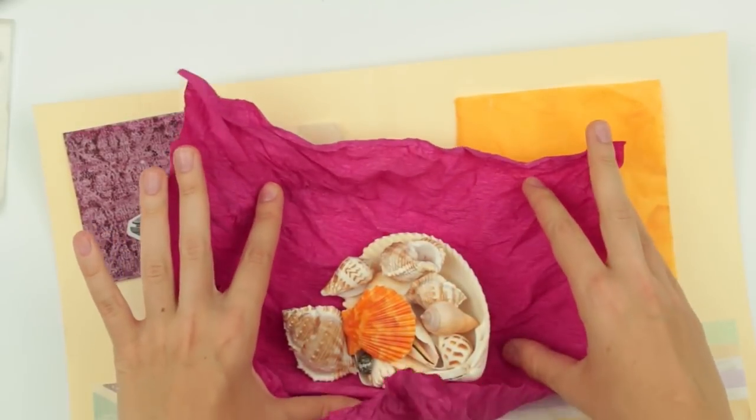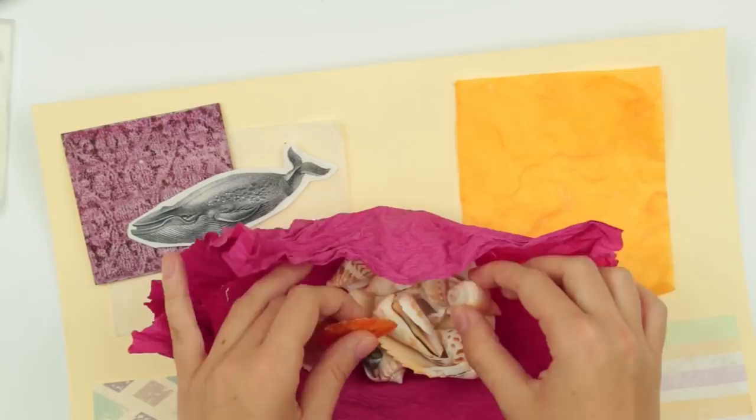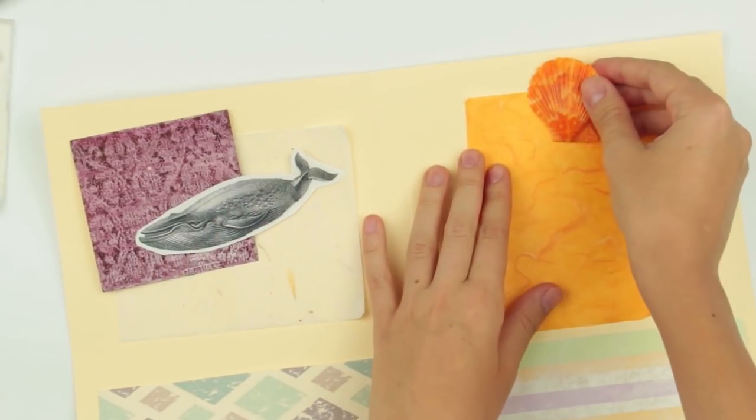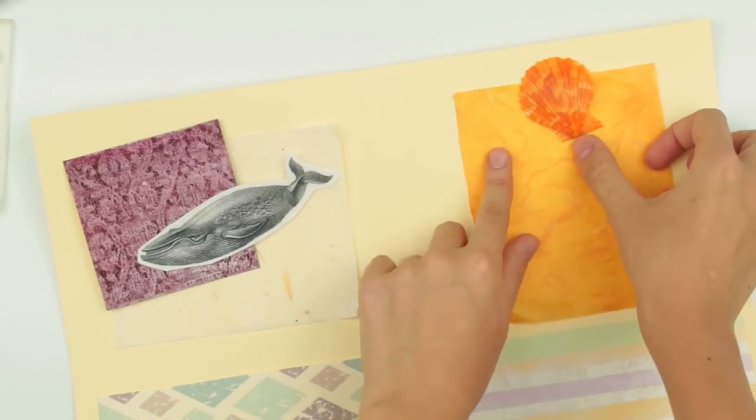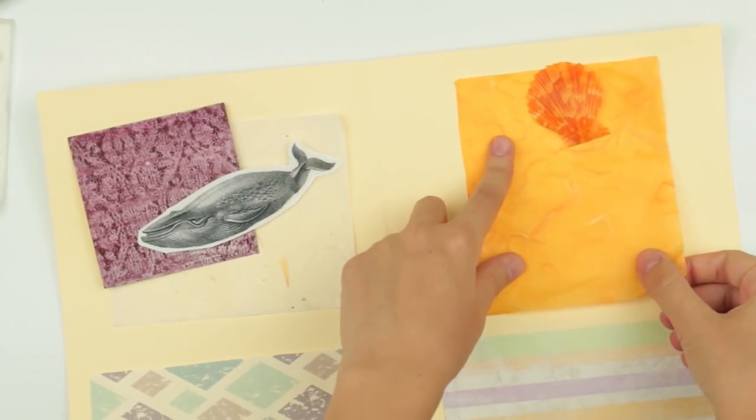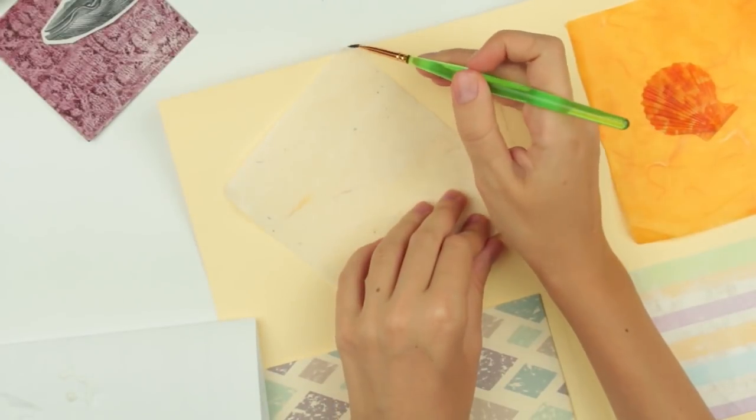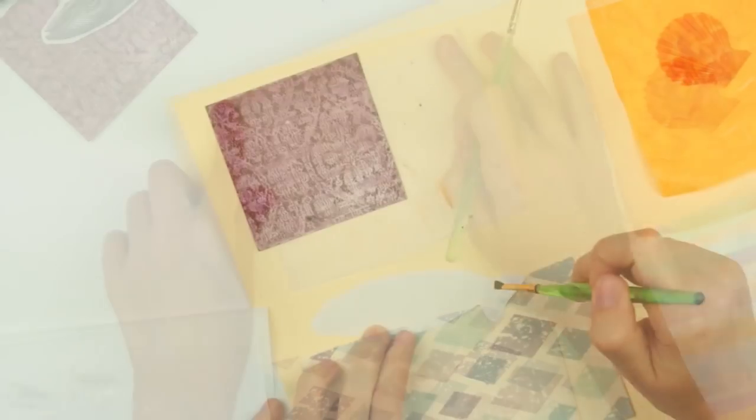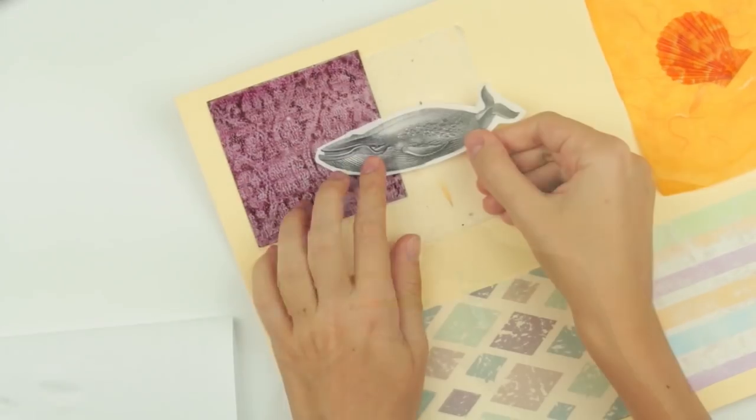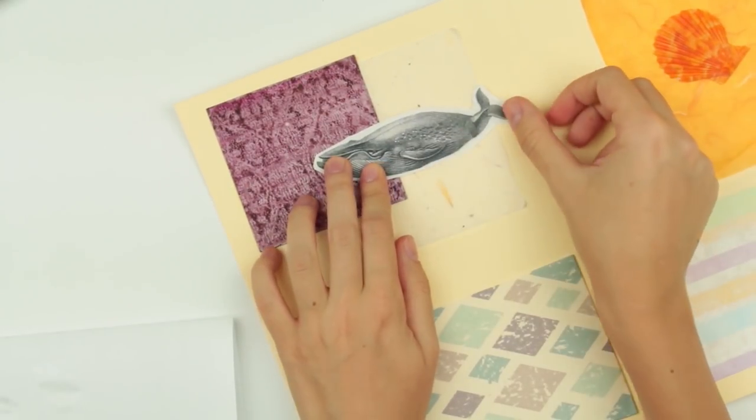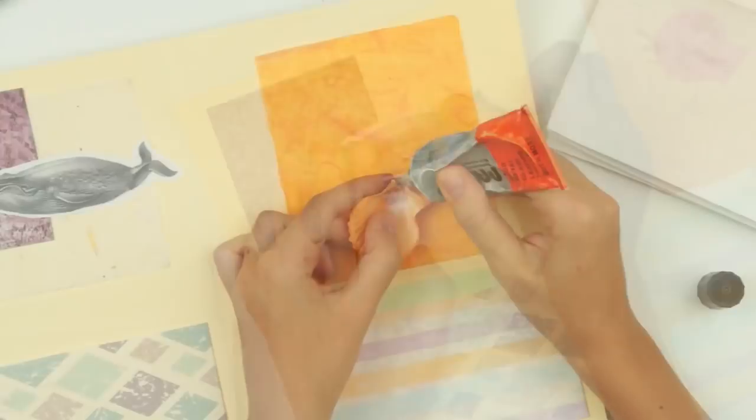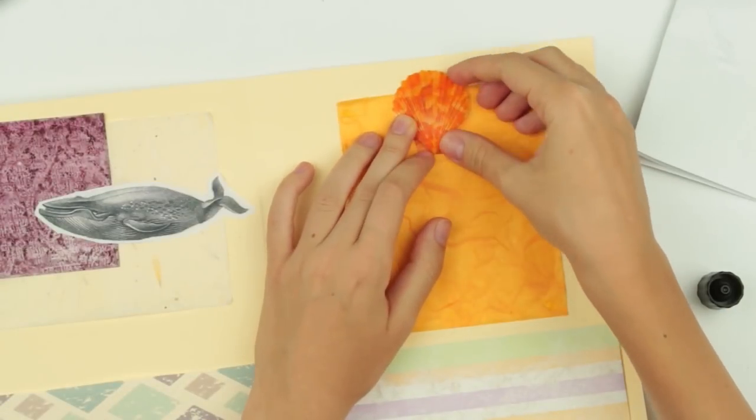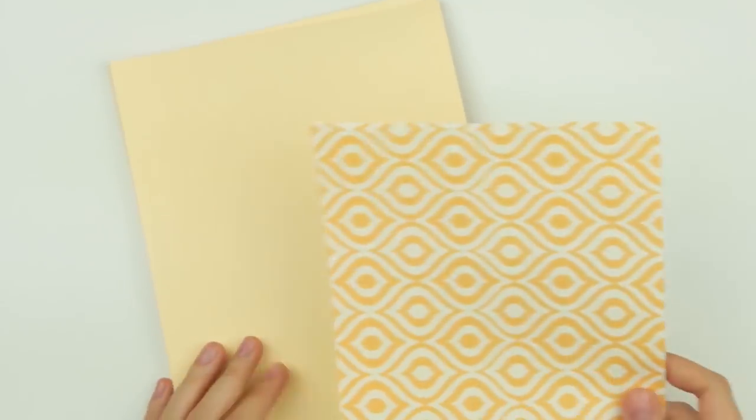We can use shells, buttons, beads, and other embellishments. Start attaching the elements. You may use a brush. Attach the shell with multi-purpose glue. Decorate the front side.